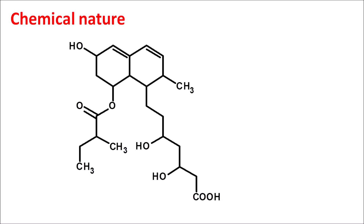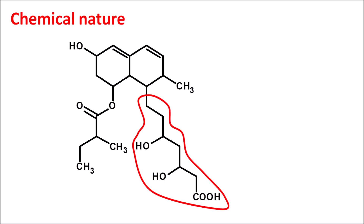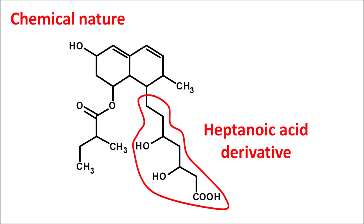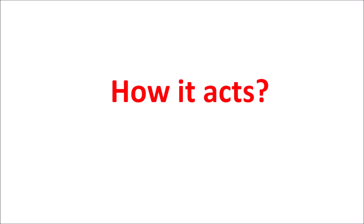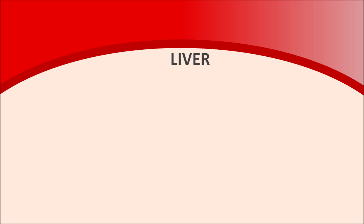By all of these actions, pravastatin acts as an anti-hyperlipidemic agent. Now let us look at the chemical nature of this drug. In the structure of pravastatin, we can observe a carboxylic acid attached to a seven-membered acyclic chain, making pravastatin a heptanoic acid derivative.